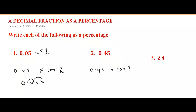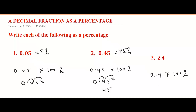For 2.4 times 100%: shift the decimal point forward two places — one and two — but the second position is empty, so fill it with zero. That gives 240.0, which equals 240 percent.